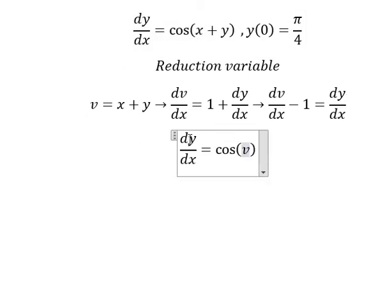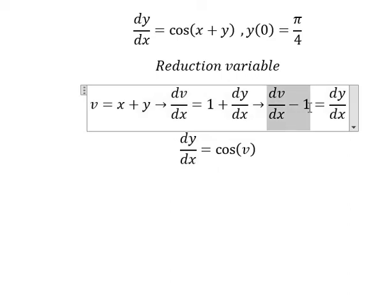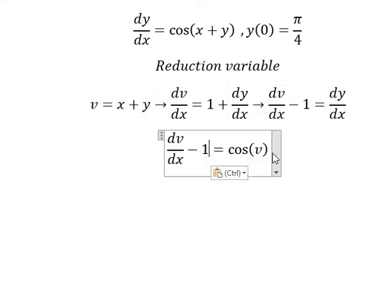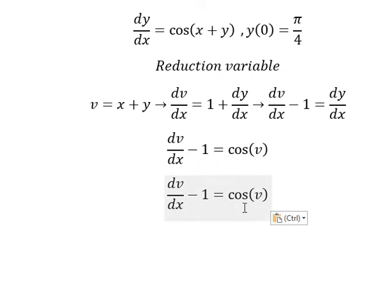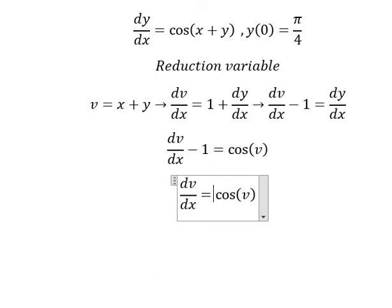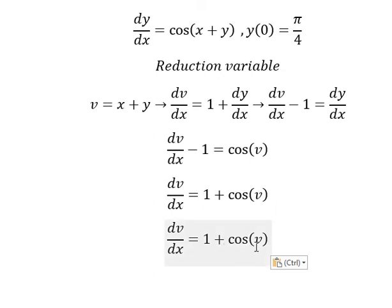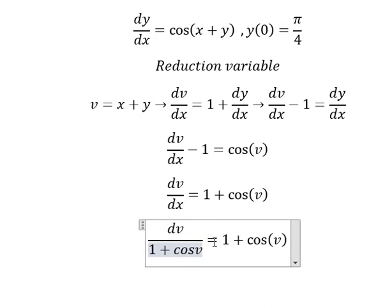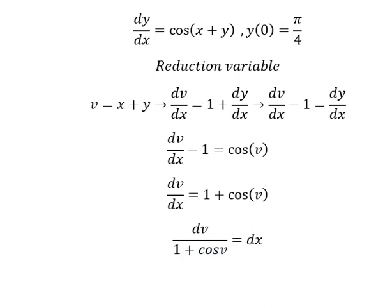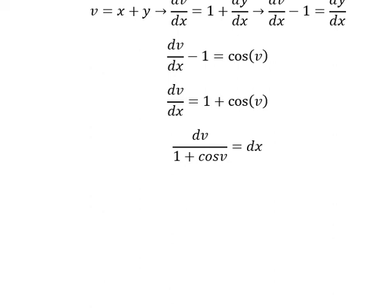Now I will put negative number 1 go to the right. Next, 1 plus cosine V we put on the left, the dx we put on the right. Next we put the integration for both sides.